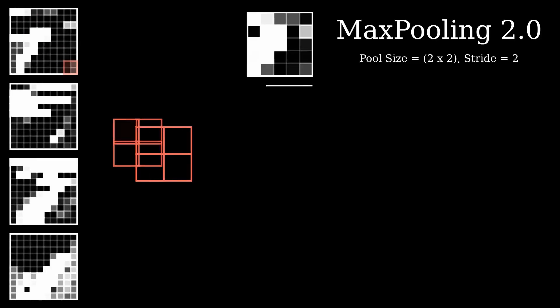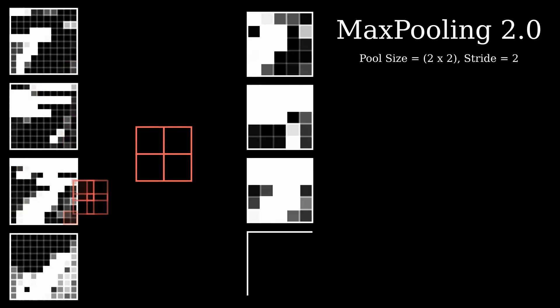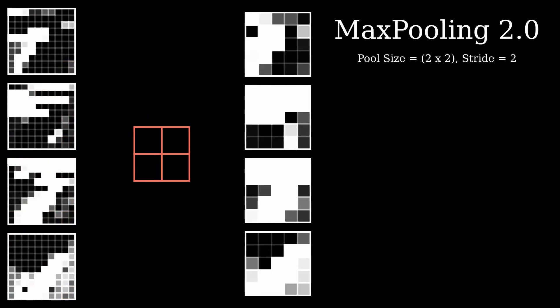Since there are 4 channels, we'll output 4 channels. What we extract is the most activated pixel values from each channel.